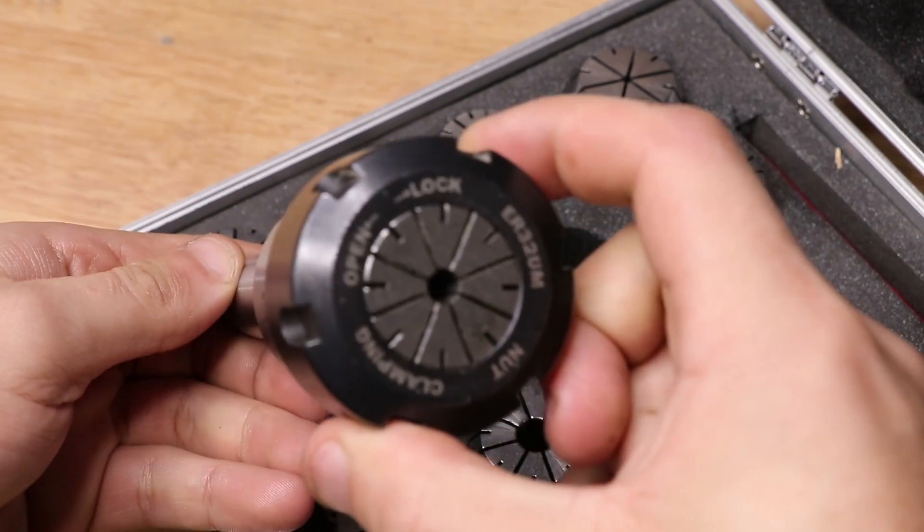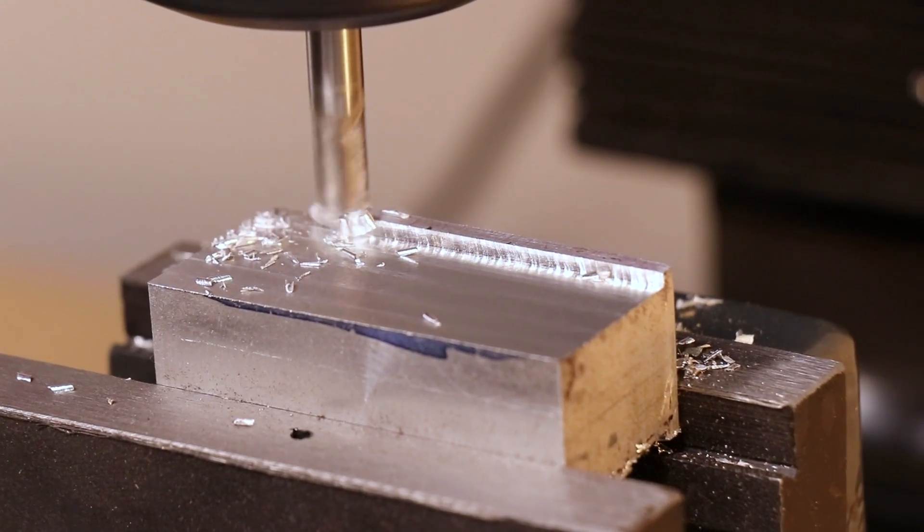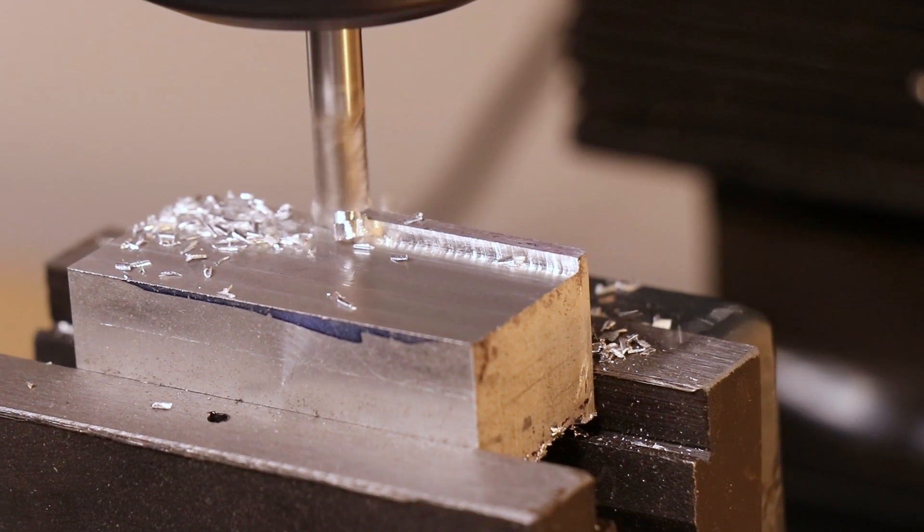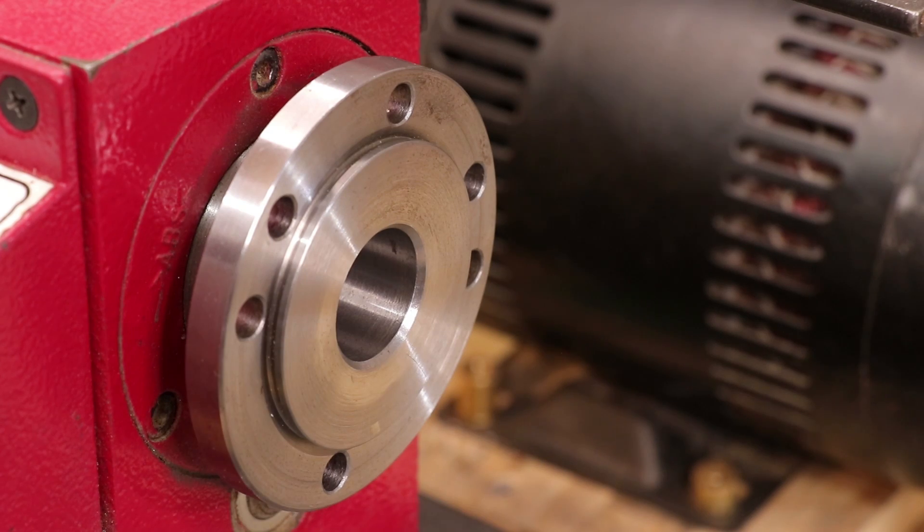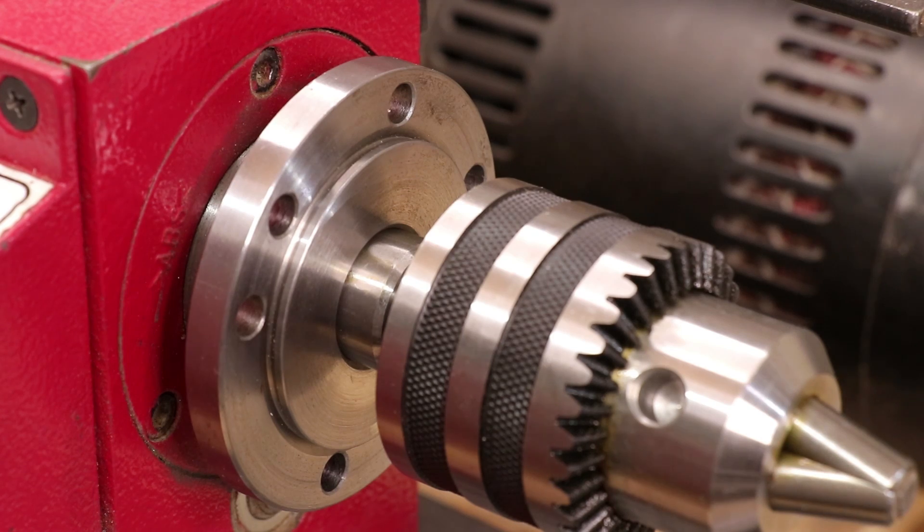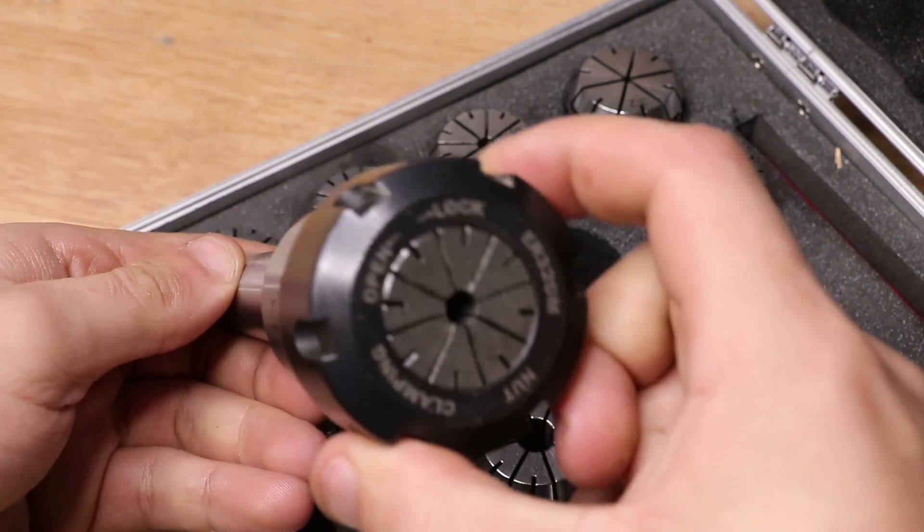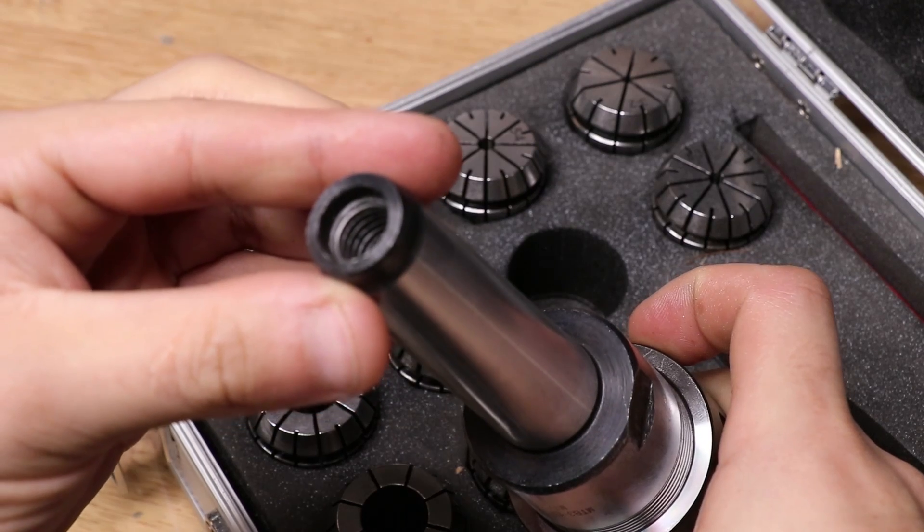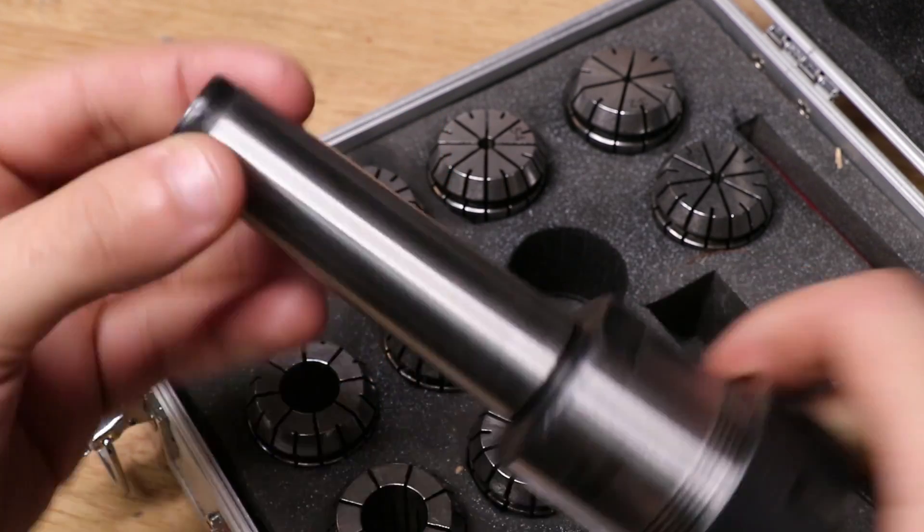One thing that I did mention in the mill video is that my mill and my lathe use the same Morse 3 taper. So in theory, I should be able to mount the chuck in my lathe spindle, and I'll have myself an ER32 collet chuck. Before I can do that though, I do need to make up a drawbar to keep the collet chuck tightly seated in the lathe spindle.